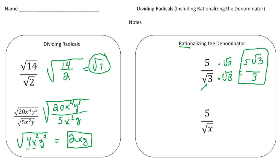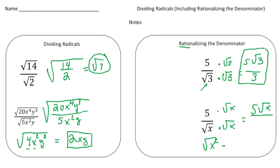Let's do one more. Here we have 5 divided by the square root of x. So I'm going to multiply both the numerator and the denominator by the square root of x. What remains on the top is 5 times radical x. And in the denominator, the square root of x times the square root of x is the square root of x squared, which is just x. So the answer is 5 radical x over x.